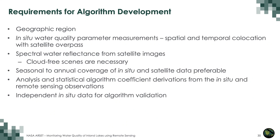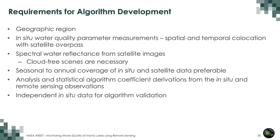Requirements for algorithm development include: selecting a geographical region or water body, obtaining in-situ water quality measurements with both spatial and temporal co-location with satellite overpasses, acquiring cloud-free spectral water reflectance images from satellites, having seasonal to annual coverage of in-situ and satellite data (since there is seasonality in atmospheric and water conditions), and performing statistical algorithm coefficient derivation followed by validation with independent in-situ data.